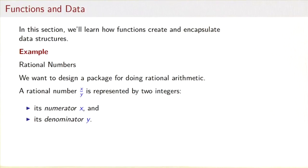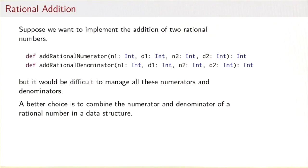A quick reminder from high school mathematics: a rational number x over y is represented by two integers, the numerator x and the denominator y.